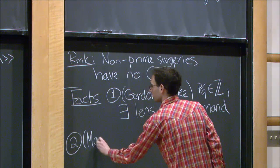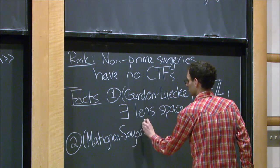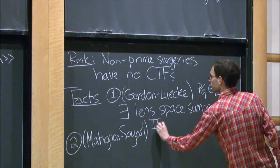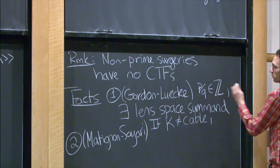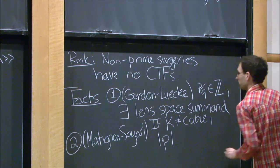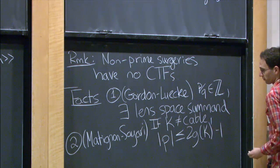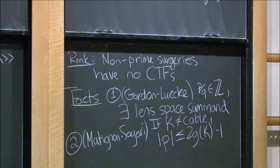Another result, due to Matignon and Sayari, tells us the surgery coefficient can't be too big. If we're not in the cable case and have a purported counterexample, then the surgery coefficient is governed by the genus of our knot.